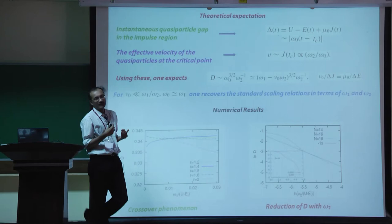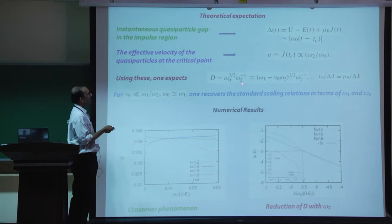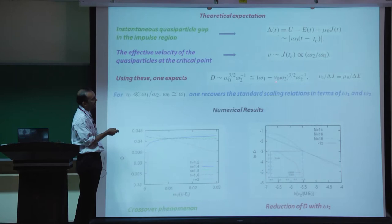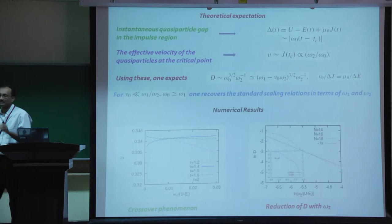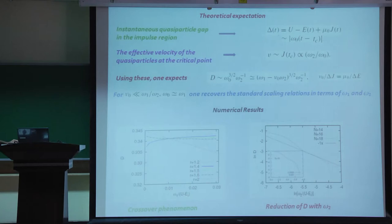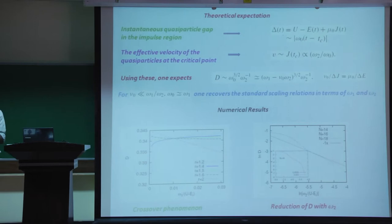Knowing that the velocity goes as omega_2/omega_0 and that delta_t goes as omega_0, one can use the scaling ideas developed earlier to find that the dipole density d goes as omega_0^(3/2) / omega_2. When the change in delta_e is large compared to the change in delta_j, omega_0 can be small and the dipole density is controlled by the experimental frequencies.